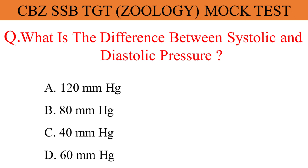What is the difference between systolic and diastolic pressure? The given options are A. 120 mm Hg, B. 80 mm Hg, C. 40 mm Hg, D. 60 mm Hg. And the correct answer is option C. 40 mm Hg.